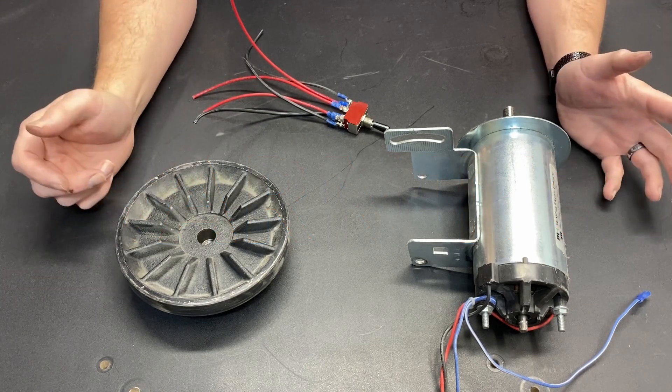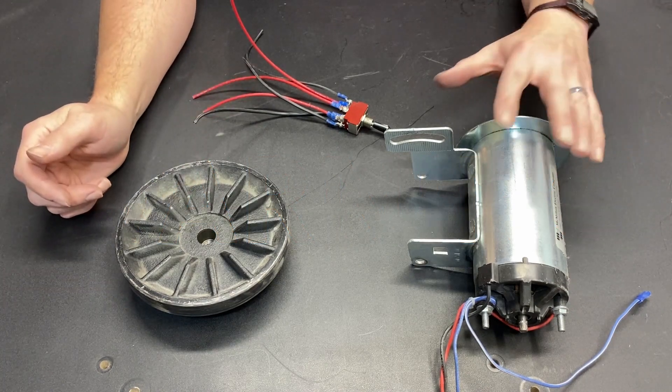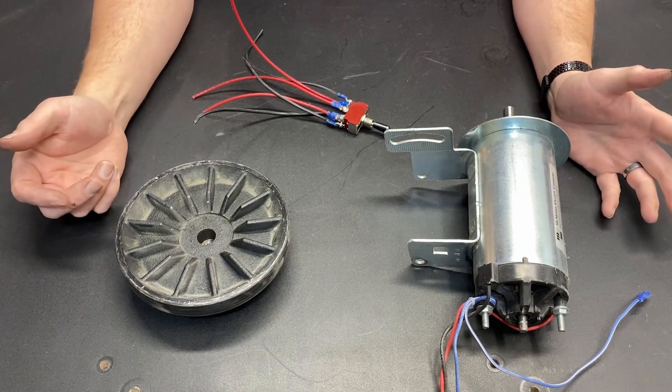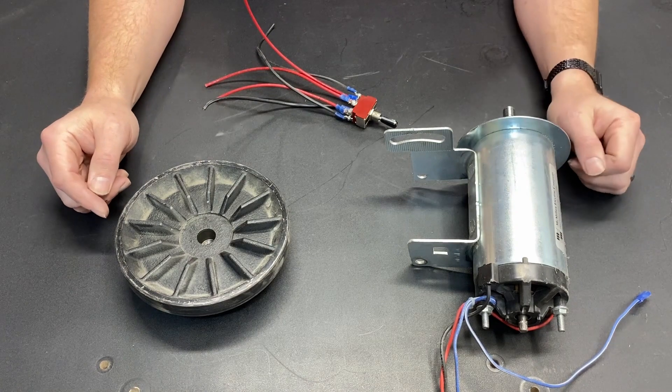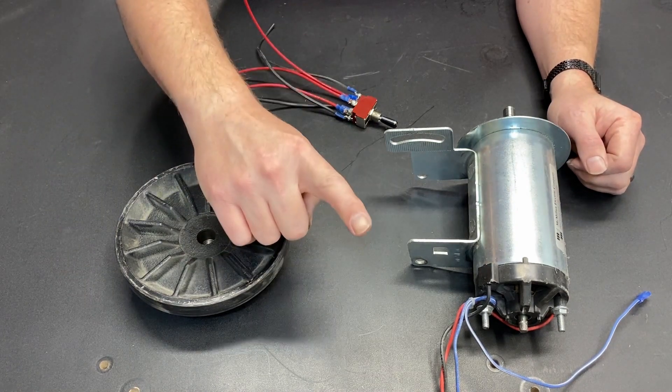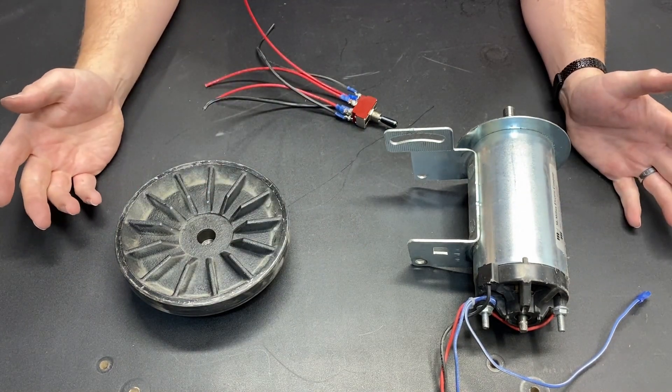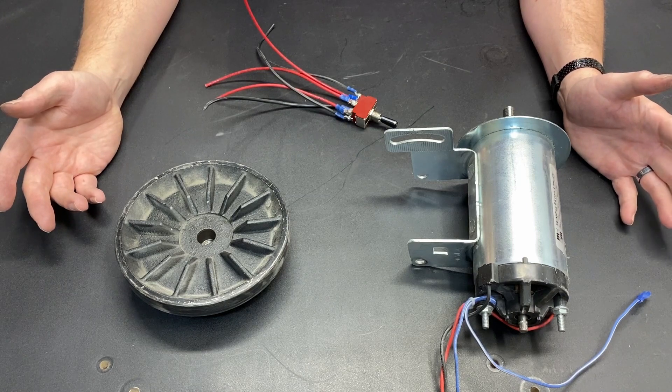The first question you might have is, why would I want to be able to run my treadmill motor in reverse? Well, it depends on your application. The treadmill motor that I have set up on my mill only ever has to run one direction, so there's no reason to have a reverse switch.